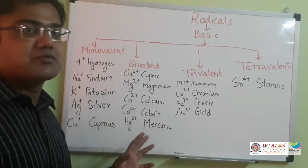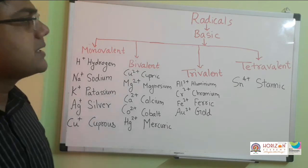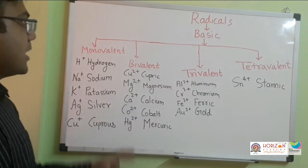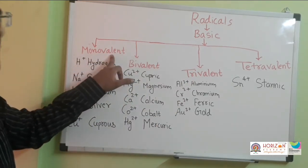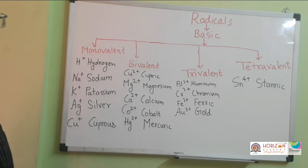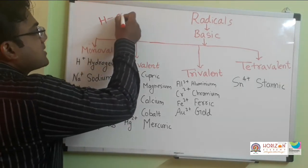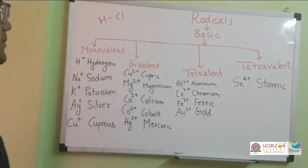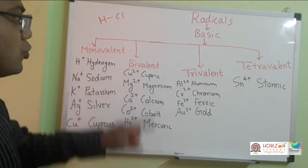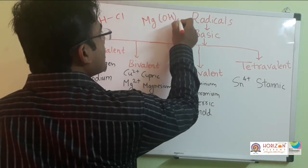There are two types of radicals: basic radicals and acidic radicals. Basic radicals have subtypes — monovalent, bivalent, trivalent, and tetravalent. Monovalent means valency of one, having a single plus charge, so it can form only a single bond — for example, H plus. Bivalent has two plus charges and can form two bonds — for example, magnesium in Mg(OH)2, where two OH groups are attached to magnesium.